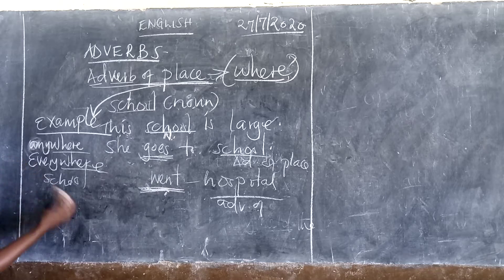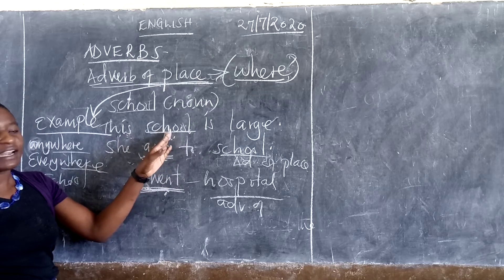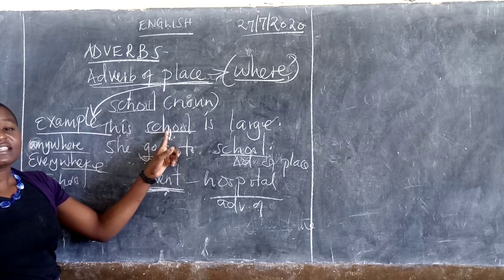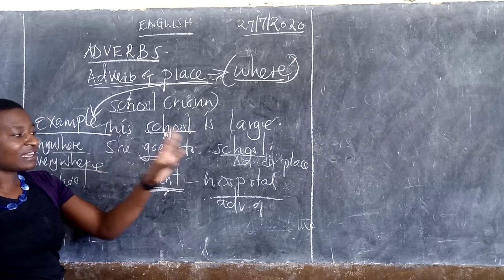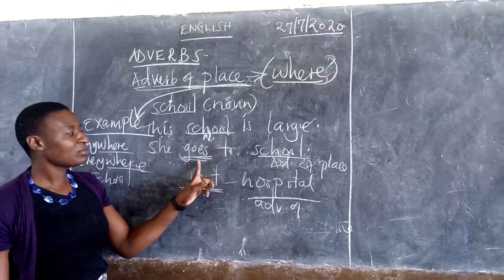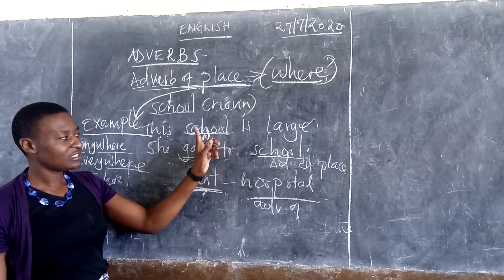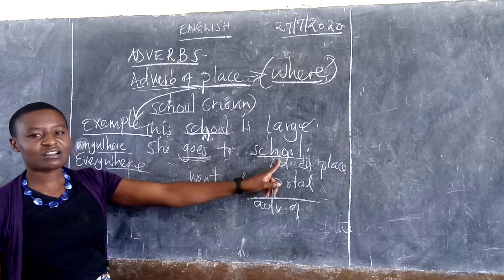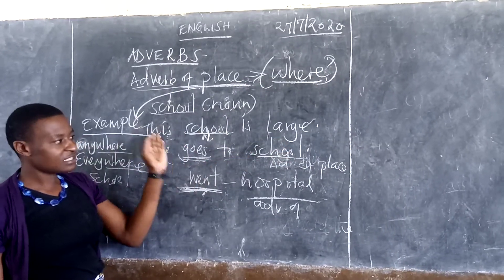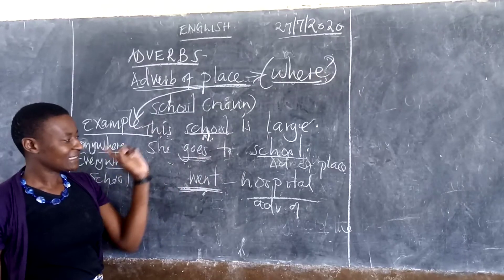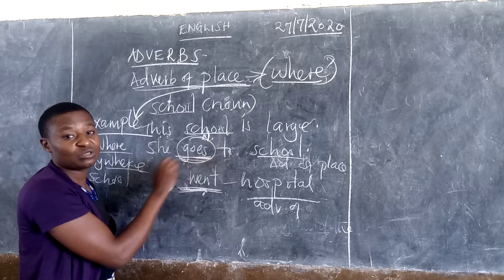She goes to school. It's different from this is a school. Just the way I've told you here. This school is large. We are talking about a noun. This place is large. But when we use a verb to describe, or when we use an adverb to describe this verb, then the school, this noun in this sentence becomes a noun, an adverb of place in this kind of sentence. This school is large gives me noun. But she goes to school, a verb appears. She went to school. That one becomes an adverb of place.